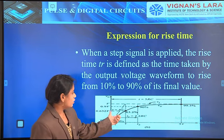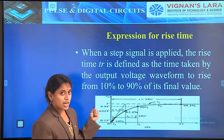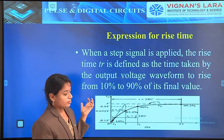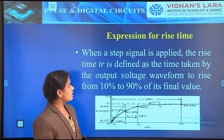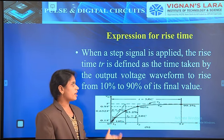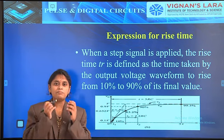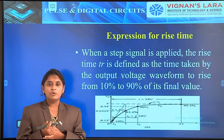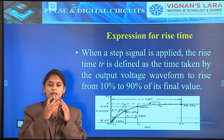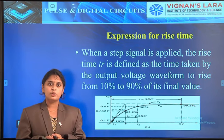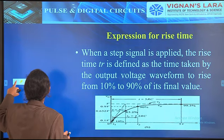At T equal to RC, the value will be 63.2 percent. At 5RC, the maximum value is applied and the output touches the V0 position. Before discussing this condition, we have to know what is meant by rise time. Rise time is the time taken by a waveform to reach from 10 percent to 90 percent of its maximum value.